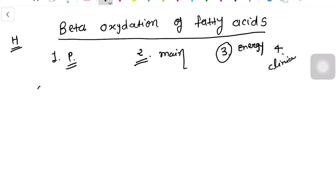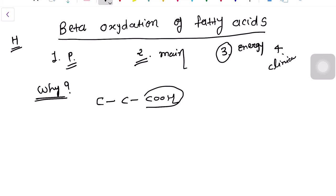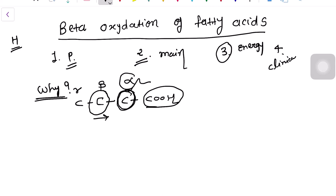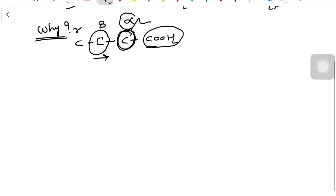Why is it known as beta oxidation? In the fatty acid, at the end there is a carboxyl group. The carbon nearest to the carboxyl group is the alpha carbon, then beta, then gamma, and so on. In beta oxidation, the main oxidation process occurs on the beta carbon — that's why it is called beta oxidation. If the oxidation process occurred on the alpha carbon, it would be called alpha oxidation, but in the human body, fatty acids are mainly oxidized at the beta carbon.